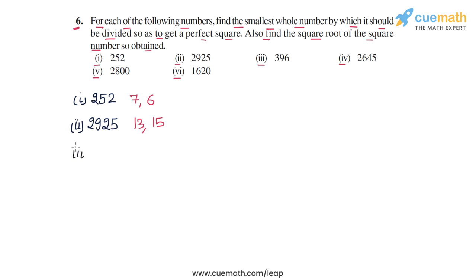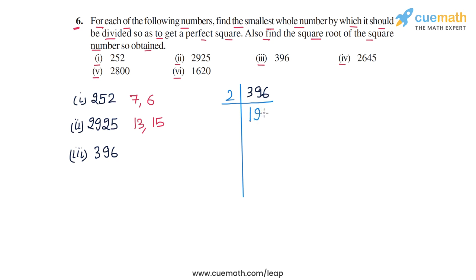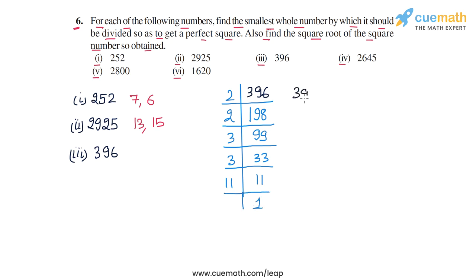In part 3, the number is 396. We prime factorize it. The last digit is 6, so it's even; we divide by 2 to get 198. Still even, divide by 2 again to get 99. 99 is divisible by 3, so divide by 3 to get 33. Still divisible by 3, divide again to get 11. Then we take out the last prime factor 11, leaving 1. So 396 = 2 × 2 × 3 × 3 × 11.